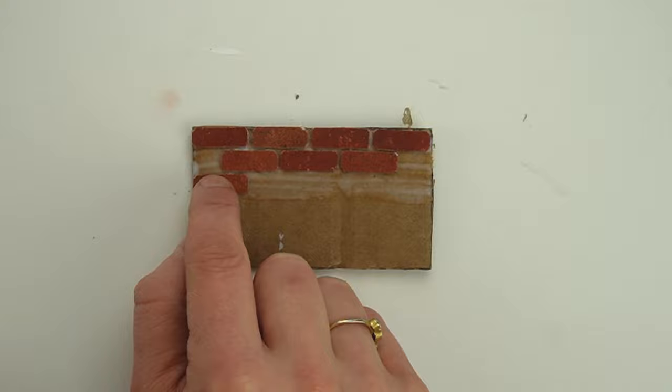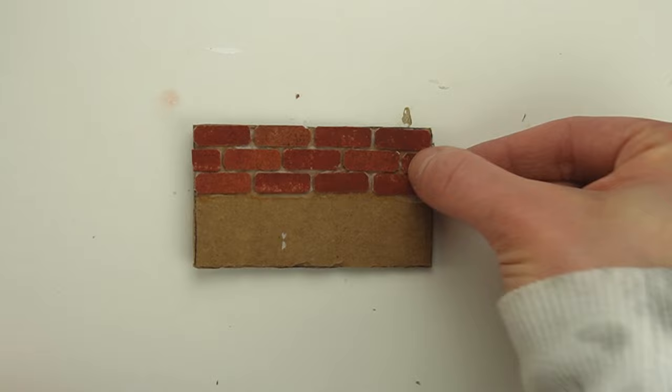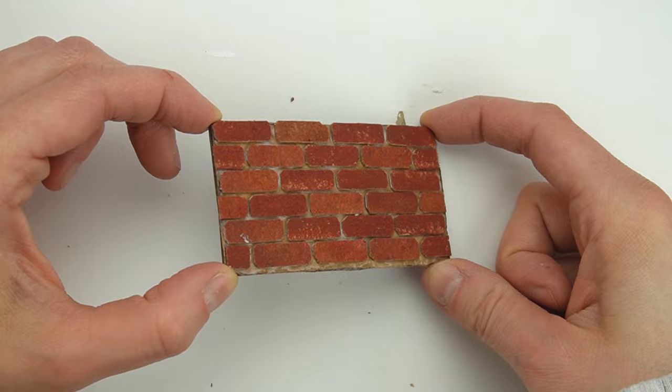This method for applying the bricks is a lot faster than if I was peeling the backing off of each brick and sticking it down using its own adhesive. This is why I prefer to cover the adhesive back with a paper pattern. I eyeballed the placement of the bricks by making sure the grout lines stayed in line with one another.